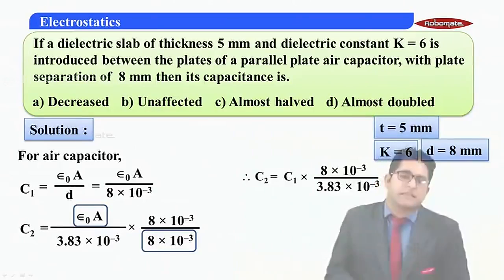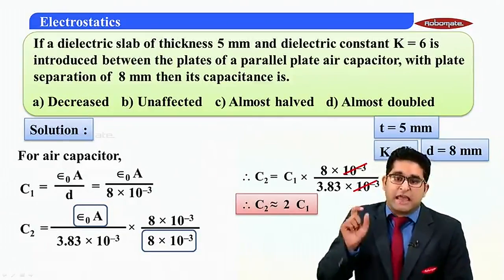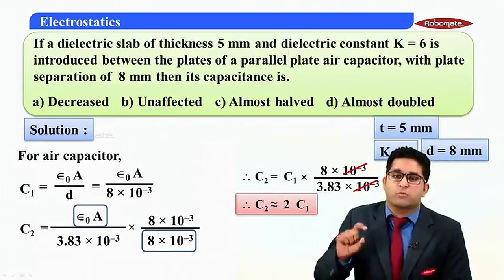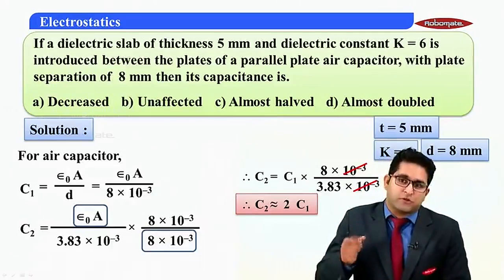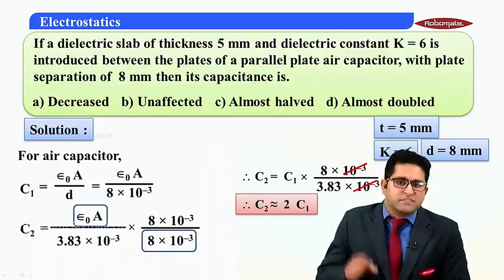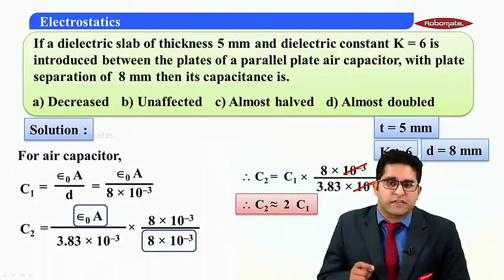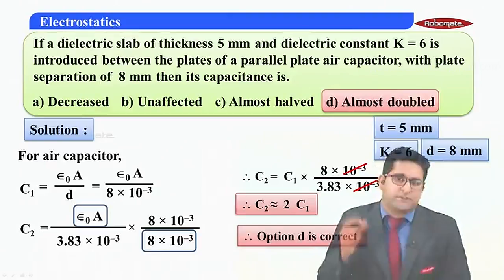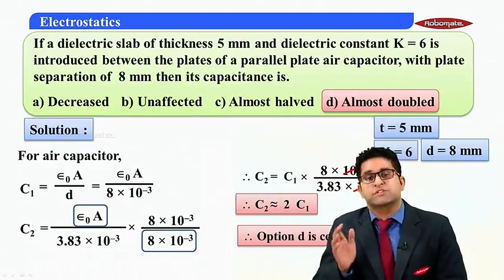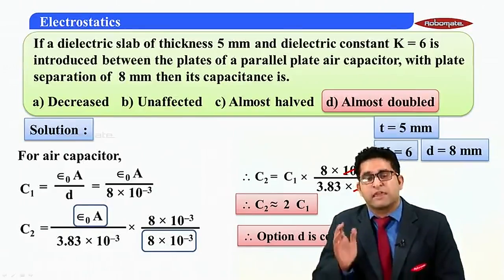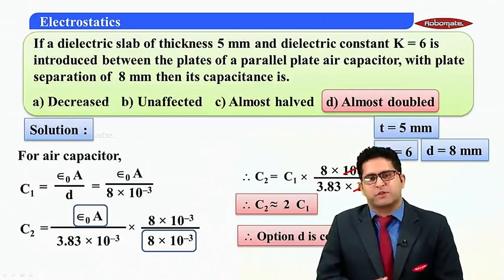Multiplying and dividing by 8 times 10 to the minus 3, the boxed part — epsilon-naught A upon 8 times 10 to the minus 3 — equals C1. So C2 equals C1 times 8 upon 3.83, which is almost 2. Therefore C2 is nearly two times C1, meaning the capacitance is almost doubled, confirming option D is correct. That concludes the MCQs on insertion of dielectrics; see you in the next module.